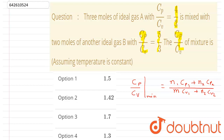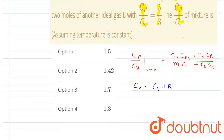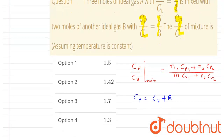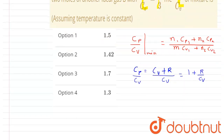We know that cp = cv + R, where cv is the molar specific heat at constant volume and cp is the molar specific heat at constant pressure. If we divide both sides by cv, we get cp/cv = 1 + R/cv.